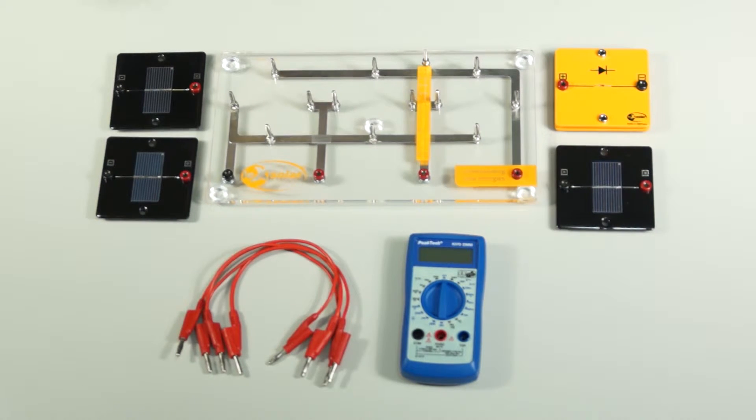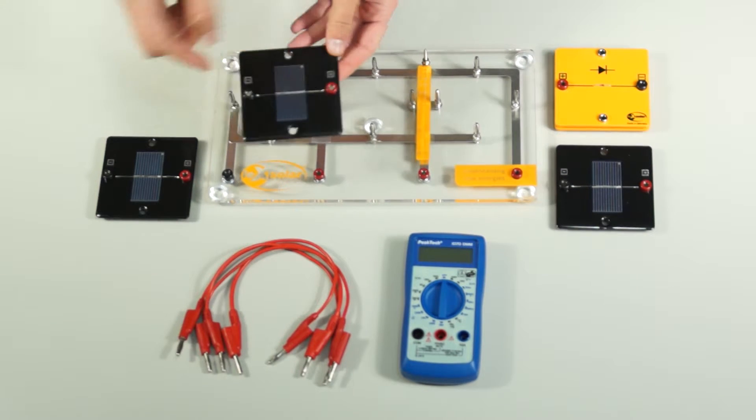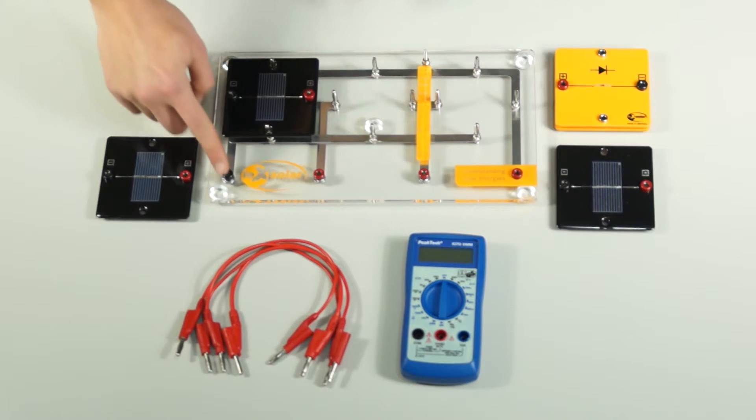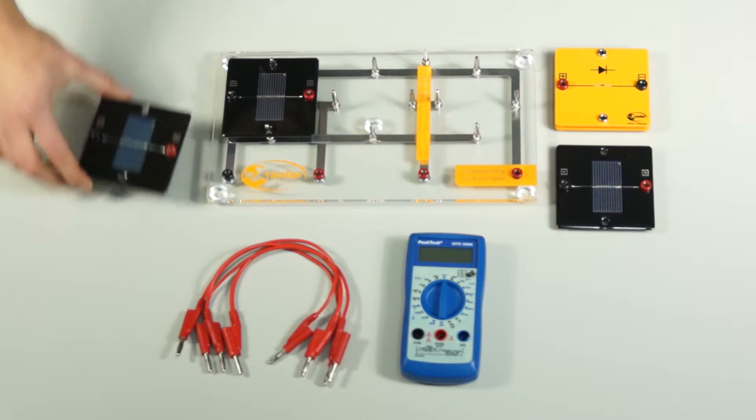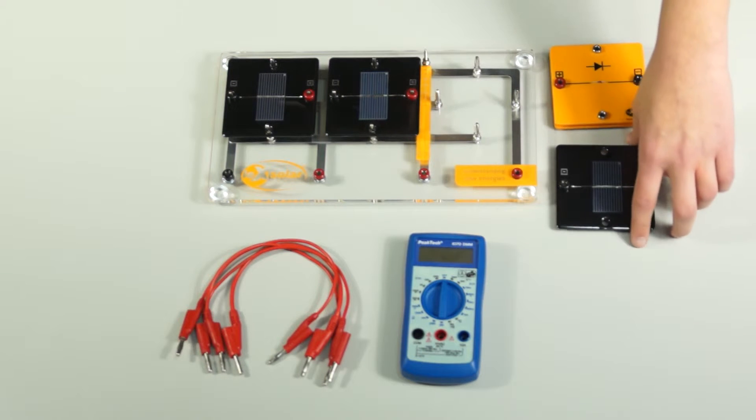First, the solar cells are attached to the base unit. You should definitely pay attention to the correct polarity. The construction of the experiment is written in detail in the accompanying instructions, so nothing can go wrong.